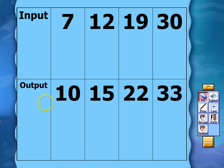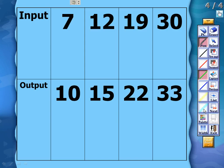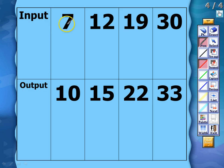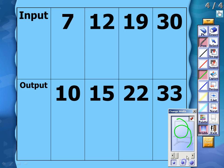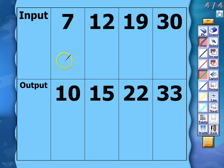We have another input/output table set up a little differently, but the same idea. It's important to identify which is the input and which is the output. The top row is the input, so 7 goes in and 10 comes out. Since 7 is increasing to 10, our two operations are addition or multiplication. 7 increases by 3 to make 10, and there's no whole number we can multiply 7 by to equal 10, so we'll try adding 3.